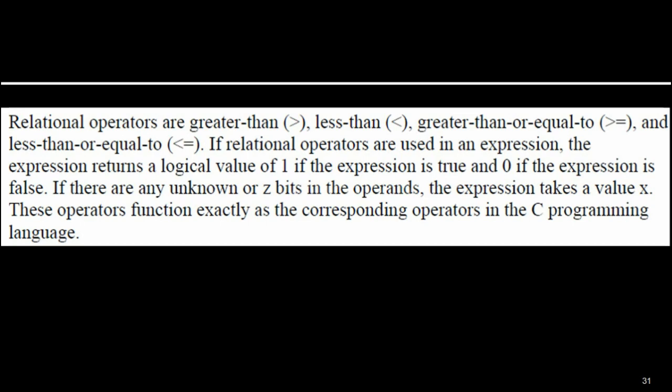If there are any unknown (X) or high-impedance (Z) values in the operand, the expression evaluates to X. The relational operators compare two different operands and produce the result: logic 0 or logic 1. After comparing, if the condition is satisfied, it produces logic 1; otherwise it produces logic 0.